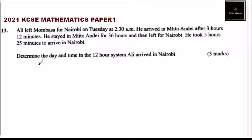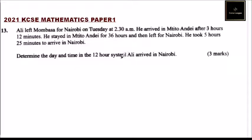This is question number 13. We are told Ari left Mombasa for Nairobi on Tuesday at 2:30 a.m. He arrived in Uchitwandei after 3 hours 12 minutes. He stayed in Uchitwandei for 36 hours and then left for Nairobi. He took 5 hours 25 minutes to arrive in Nairobi. Determine the day and the time in 12-hour system that Ari arrived in Nairobi.